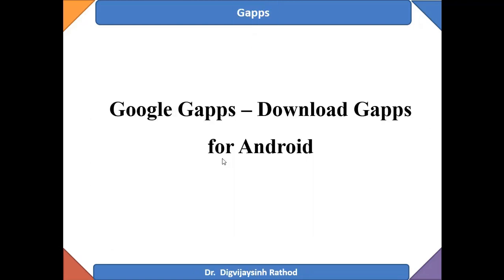Today I plan to discuss Google GApps — that is, Google Applications — and how to download them either on a mobile phone where you have installed a custom ROM, or in an emulator or Android Virtual Device. When you install a custom ROM on your Android phone, you don't get the Google Play Store or other Google applications. Similarly, if you create an Android virtual machine in GenyMotion, you don't get the Play Store.